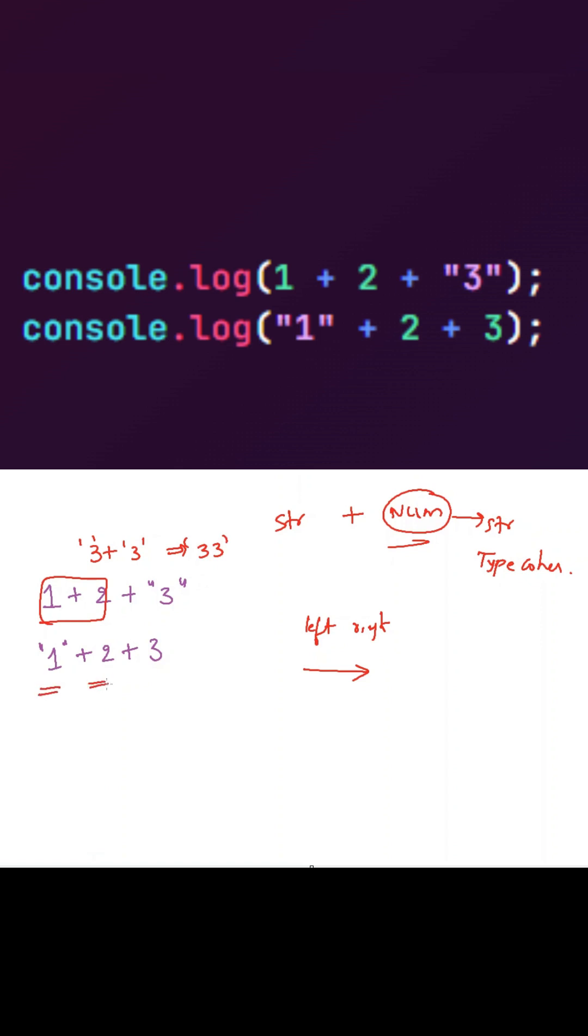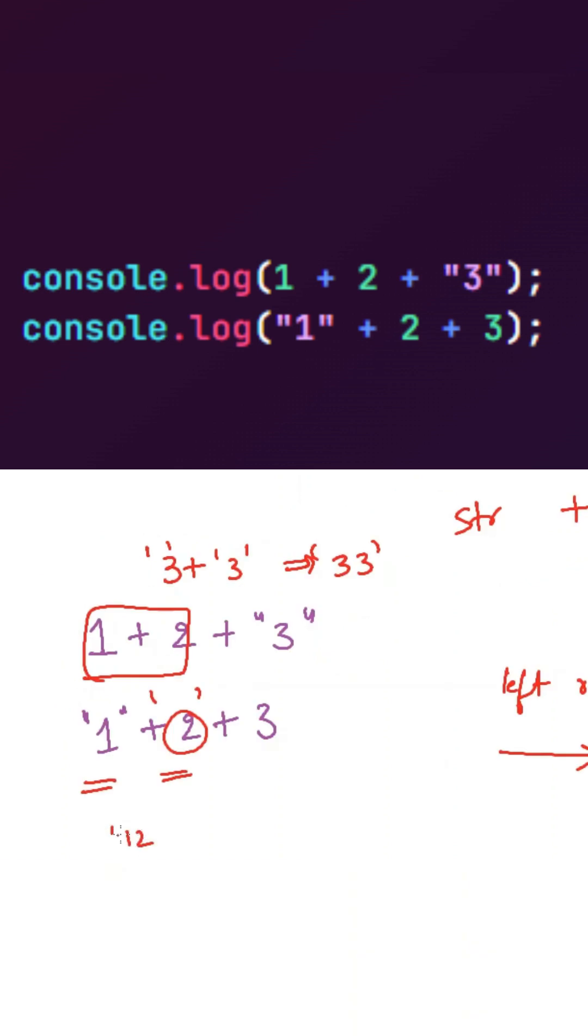Now string plus number. So 2 will be converted into string 2. Now our expression will become string 12 plus number 3. So number will be converted into string 3. Now overall expression will become 123 as a string due to string concatenation concept in JavaScript.